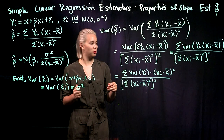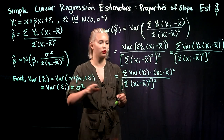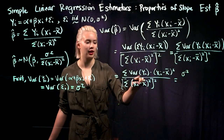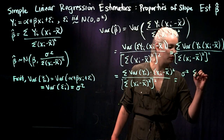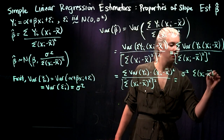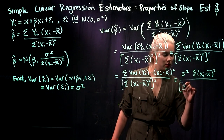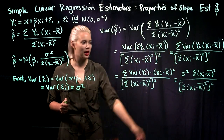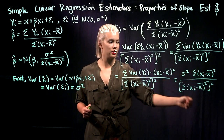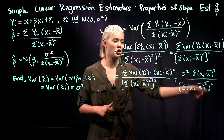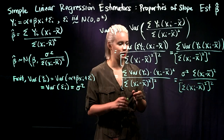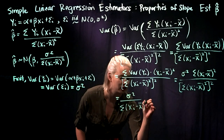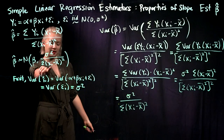Now we know that the variance of the yi's is sigma squared, so we plug that in. Since it doesn't have a subscript i, we can pull it out of the sum. We then notice we have sigma squared times something in the numerator divided by that same thing squared in the denominator. We cancel one copy from the numerator with one from the denominator, and we end up with sigma squared over the sum of xi minus x bar squared. That's exactly what we wanted to show.